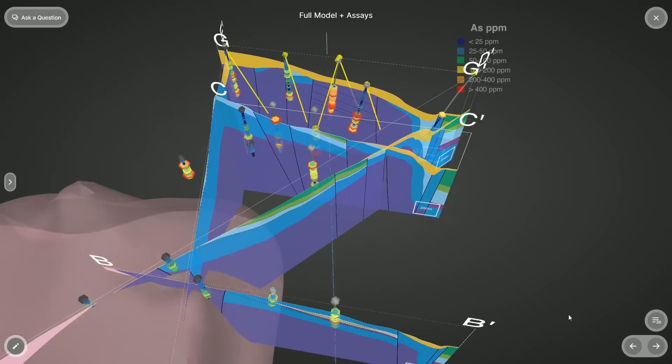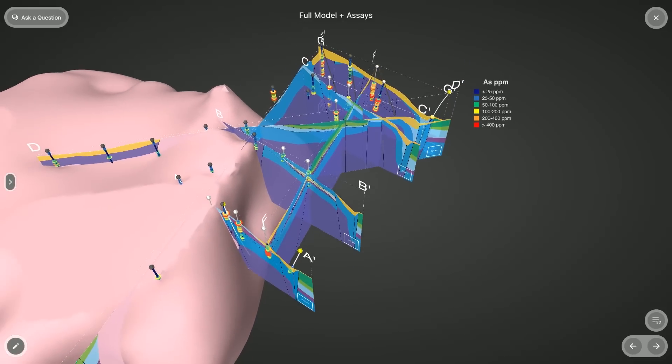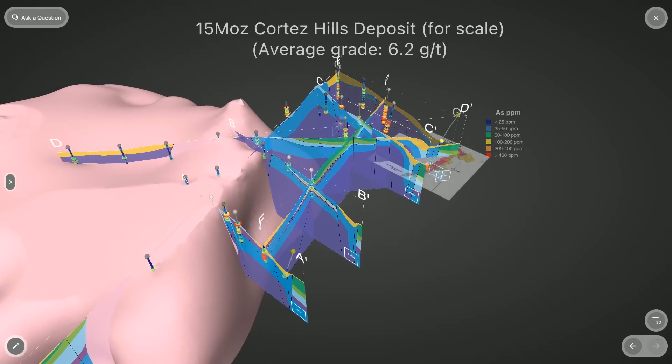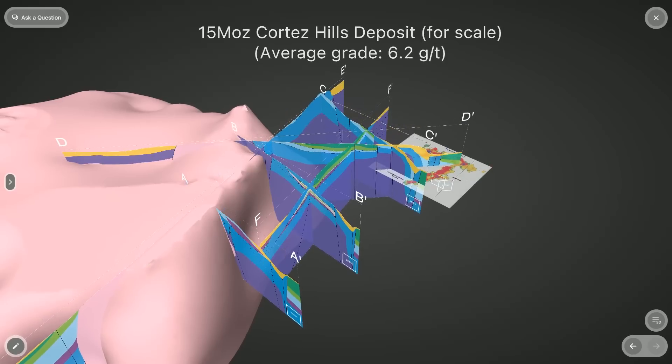The model is now available on our website at NevadaExploration.com, and we invite you to review each of the data layers, including the assay results from all drill holes received to date, as well as deposit footprints of other important Carlin deposits for scale. So be sure to stay tuned, and thank you for watching.